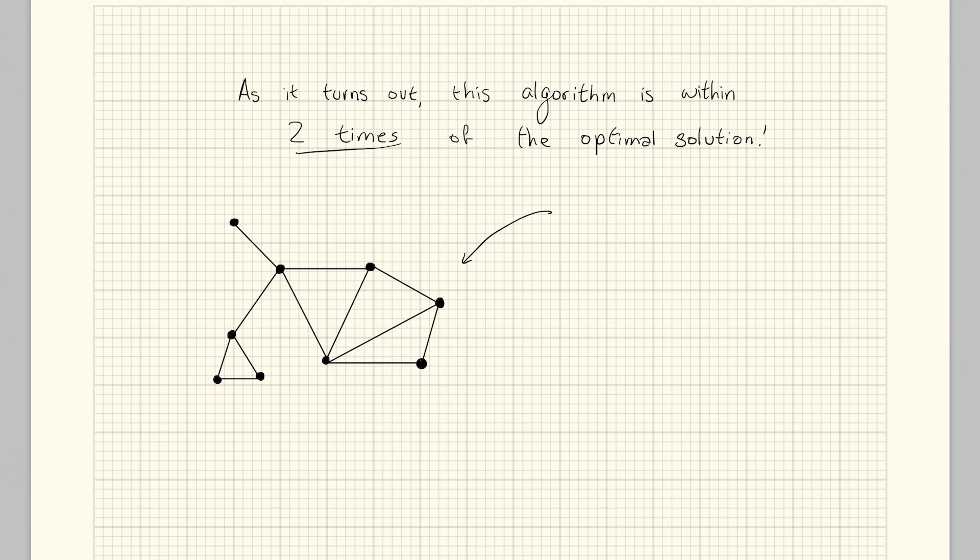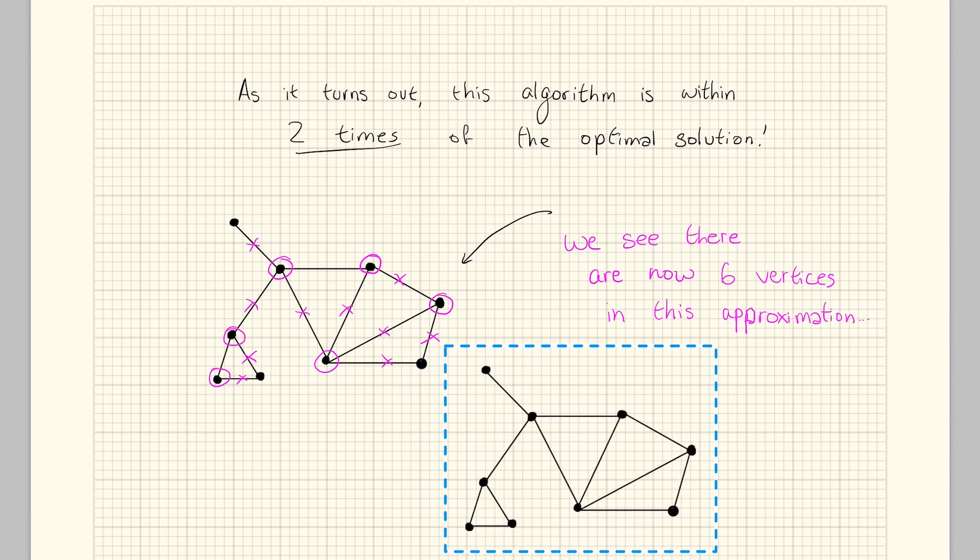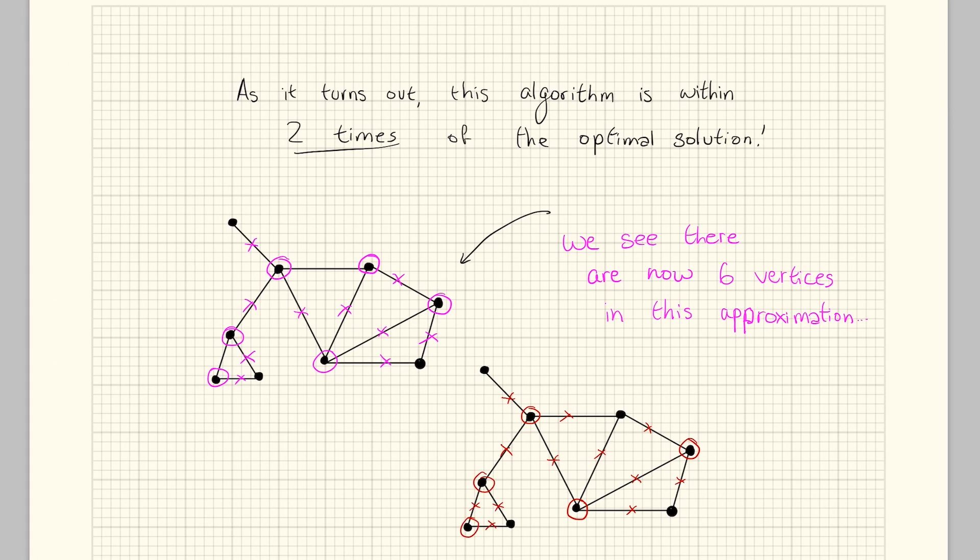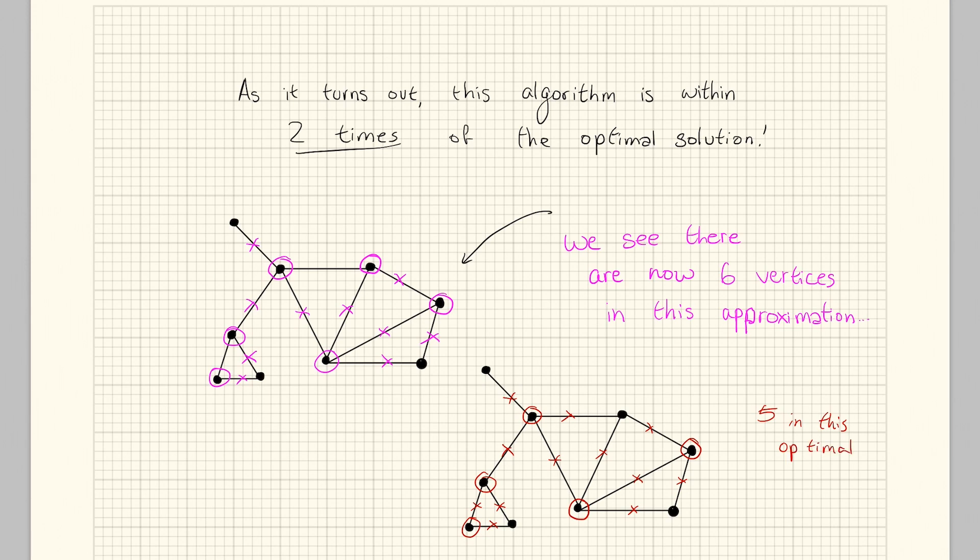Now as it turns out, this algorithm is actually within two times of the optimal solution. We'll reuse our graph to illustrate this. Now we begin by selecting this one edge and circling its two outer vertices. We can then begin crossing out all of the edges that this graph is connected to. We now find a new edge that we haven't already crossed out and circle those edges and repeat. Now we see there are six vertices in this approximation. We'll repeat this for an optimal solution that we've already solved for. And we see that there are five in this optimal solution and we notice that six is significantly less than ten. So we are in fact within two times of the optimal for this problem.